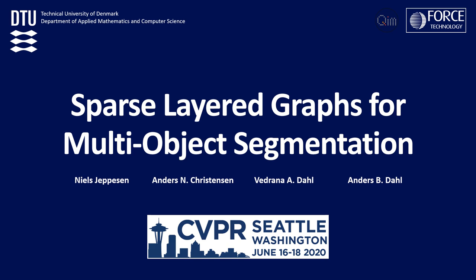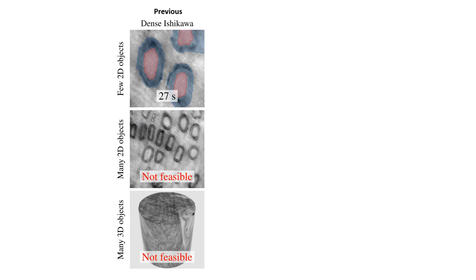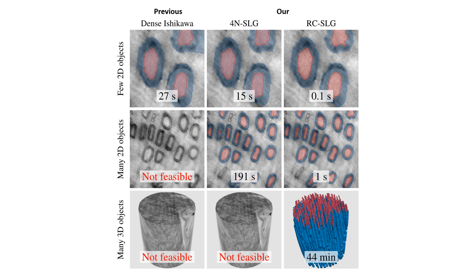Graph-cut algorithms are an effective way for solving many optimization problems, such as image segmentation. In this paper, we propose a novel graph design for multi-object segmentation using sparse layers that allows us to solve much larger problems than similar previous methods.